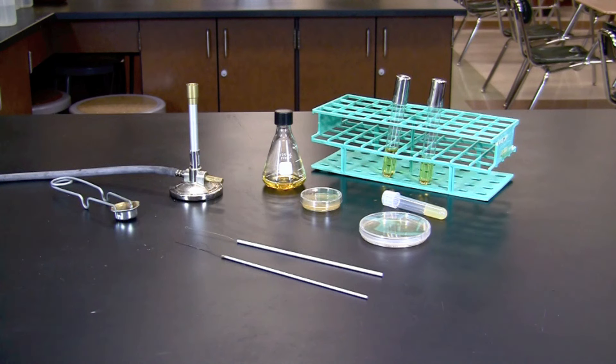In this video you will learn how to perform streak plate technique. The streak plate method allows isolation of a single colony from a bacterial culture by splitting the plate into quadrants and diluting the bacteria repeatedly as the loop is streaked through each quadrant.